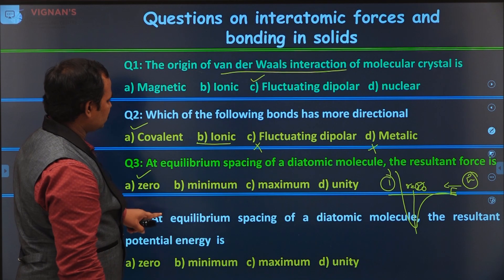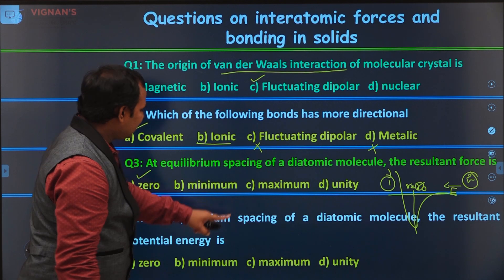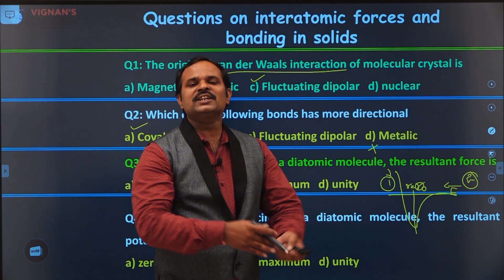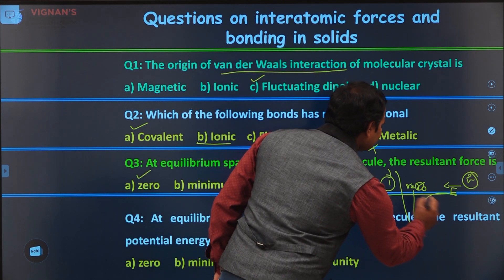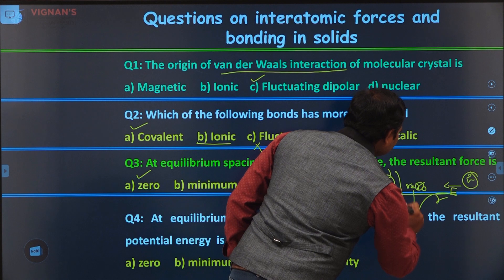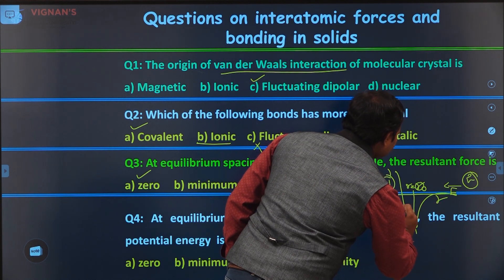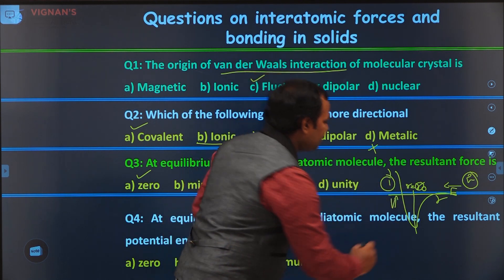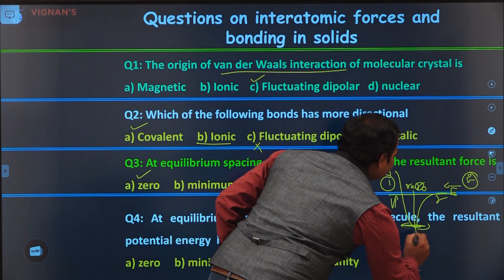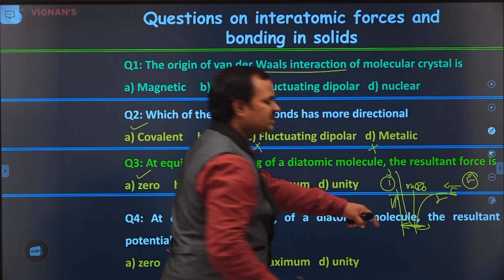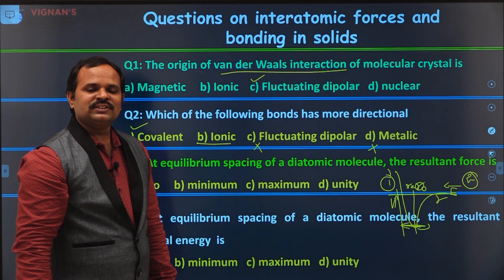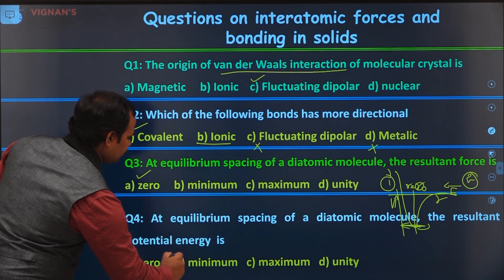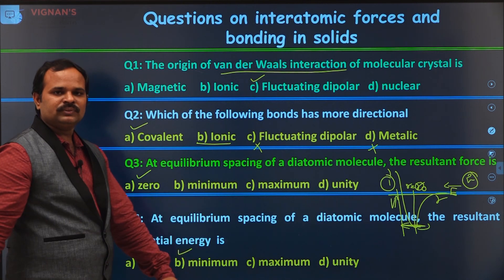In the same question, at equilibrium spacing of the diatomic molecule, the resultant potential energy is. When the force is zero, the potential energy is constant. The constant is a minimum. You can see this is the interatomic distances versus the potential energy. Now you can see at equilibrium distance, there is a minimum potential energy. This minimum potential energy is called the binding energy of the crystal or cohesive energy of the crystal. So the potential energy is minimum. Answer is minimum.